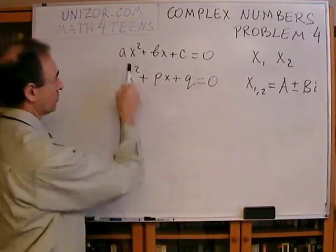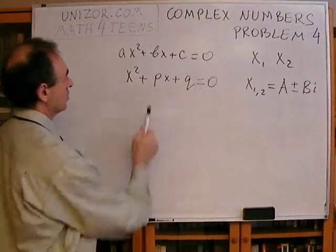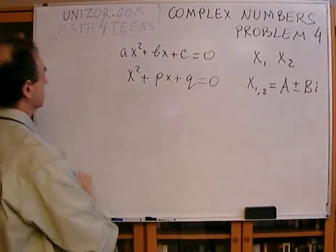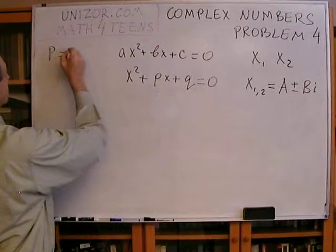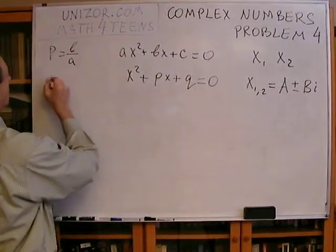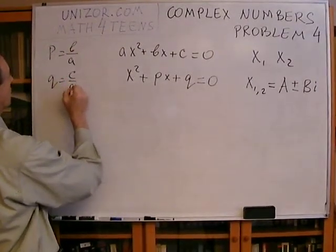So A is not equal to zero because it's a quadratic equation. So instead of solving this, I will solve this, where P is equal to B over A and Q is equal to C over A.